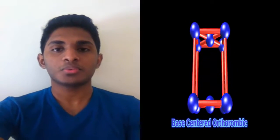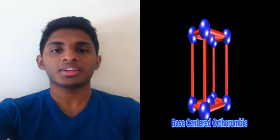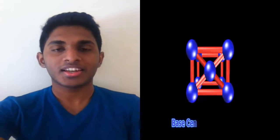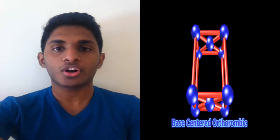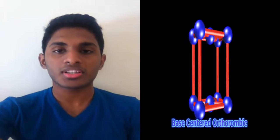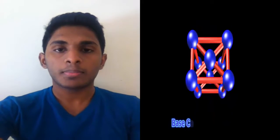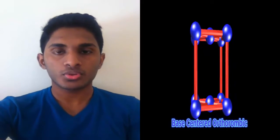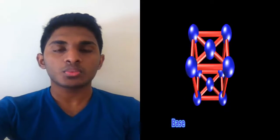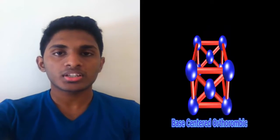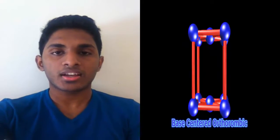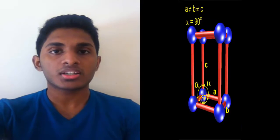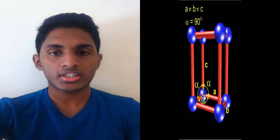Hi, this is 15 BME 1153, talking about the base centered orthorhombic lattices. Base centered orthorhombic lattice, like all other lattices, has lattice points at the eight corners of the unit cell, plus two additional points at the centers of the two parallel sides of the unit cell. It has unit cell vectors where A is not equal to B is not equal to C, and the interaxial angles where alpha equals beta equals gamma, which equals 90 degrees. Thank you.